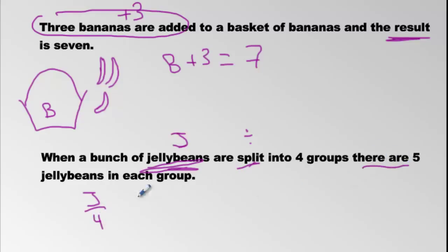There are five in each group. Isn't that the answer? There are five in each group. So we must have had what? Twenty to start with. Twenty divided by four is five. And here we must have had four bananas to start with inside the basket. That's going to be later on in the unit. I'm just giving you a little preview.